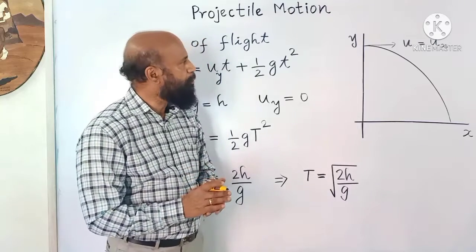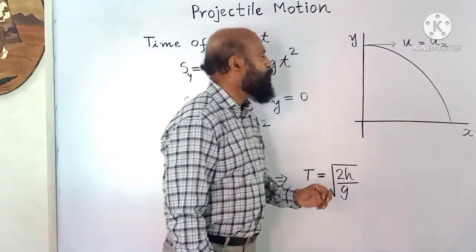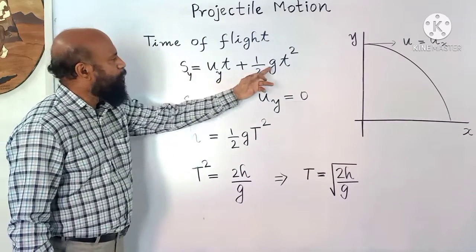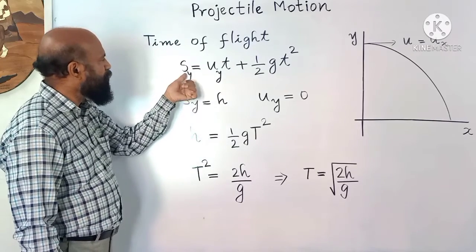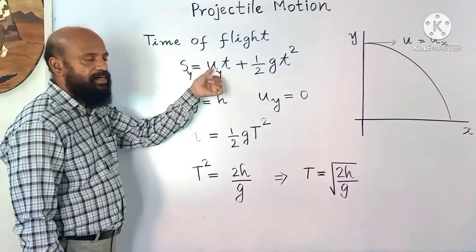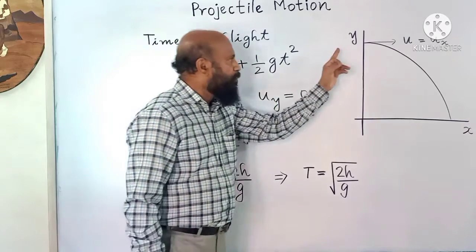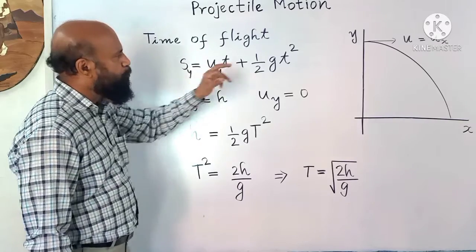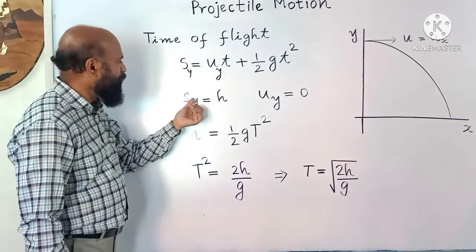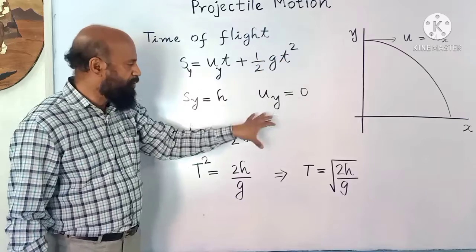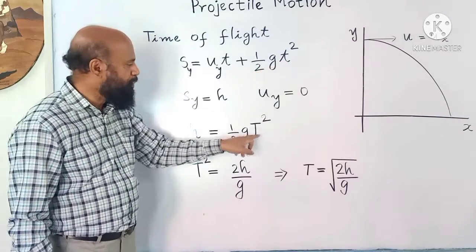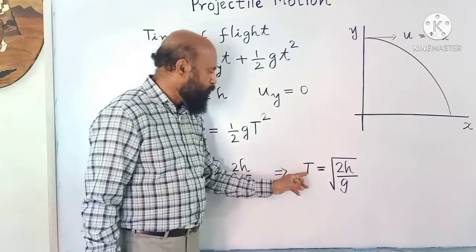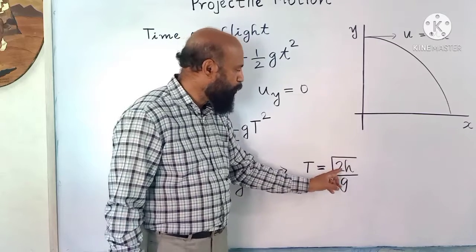Time of flight is the time taken by the projectile to complete its motion, or the time taken by the body to hit the ground. Using s = u·t + ½a·t², and since it is moving in the vertical direction with initial vertical velocity u_y = 0 (thrown horizontally), we write h = ½g·T². From this, T² = 2h/g, so the time of flight T = √(2h/g).